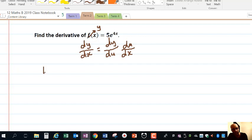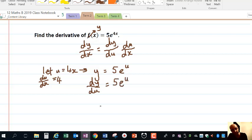Let's make the substitution. So let u equal 4x. Therefore, we can write y as 5 times e to the u. So du dx equals 4. And dy du, the derivative of e to the u is e to the u. So we have 5e to the u there as well.